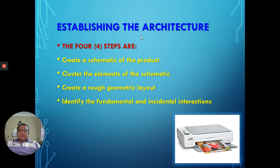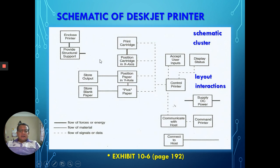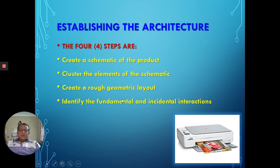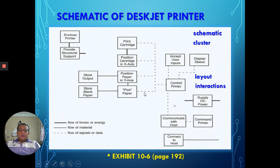How do you establish the architecture of a product? Four steps: first, create the schematic or basic outline of the product by component. Second, cluster the components grouped together by their function. Third, create a rough geometric layout — the assembly of the final product. Fourth, identify what are the interactions — electrical or mechanical functions — of the chunks that need to be put together.